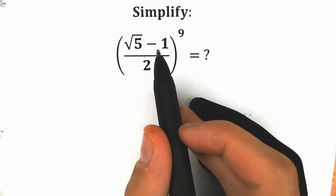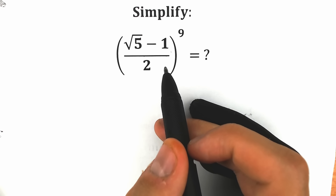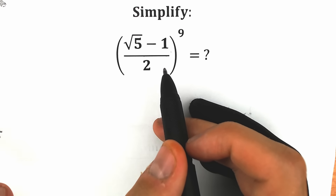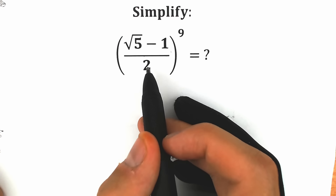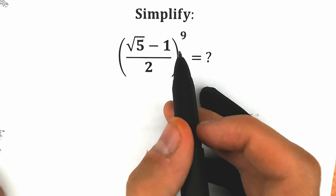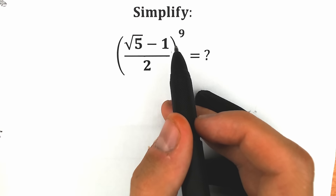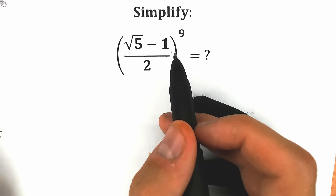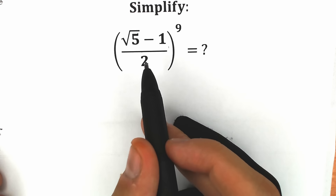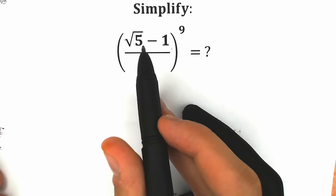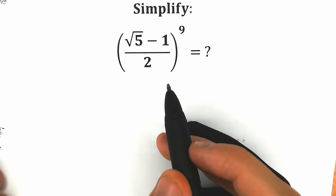We need to rate this — square root of 5 minus 1, all over 2 — to the 9th power. A lot of students might be saying: hey mister, this is a very easy challenge, we just need to multiply this expression by itself 9 times because we have 9th power. But it's really hard to do it like that. Right now I'm going to show you a really great trick — how can we find this value, how can we rate this expression to the 9th power.